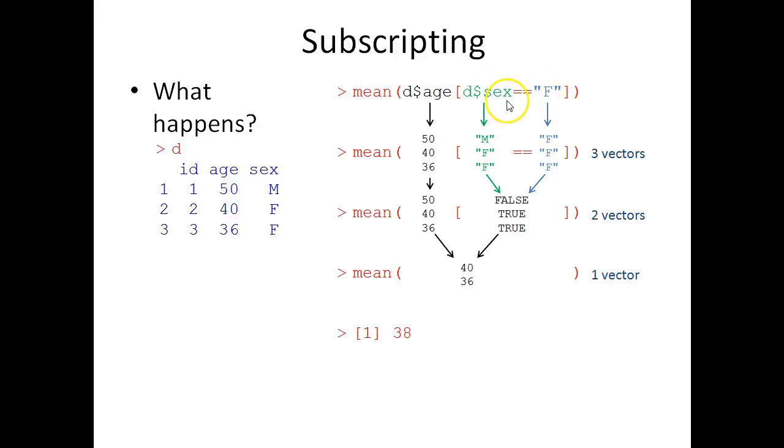And what happens when R tries to decipher this piece of code is that you have mean, which is the command you want to perform, and you have the data, which is a vector of length three, a column from data set D.